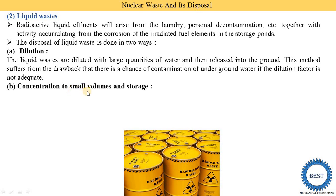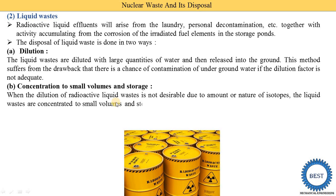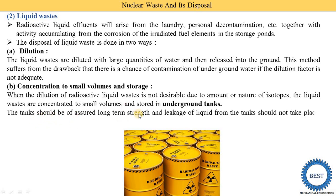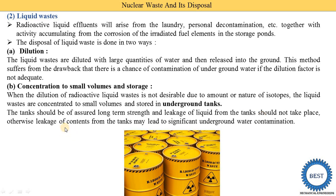The second method is concentration to small volumes and storage. When dilution of radioactive liquid waste is not desirable due to the amount or nature of the isotopes, the liquid waste is concentrated to a small volume and stored in underground tanks. The tanks shall be of assured long-term strength, and leakage from the tank shall not take place; otherwise leakage of contents may lead to significant underground water contamination.